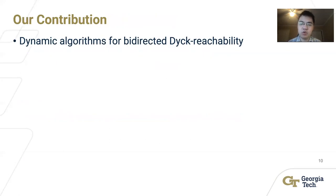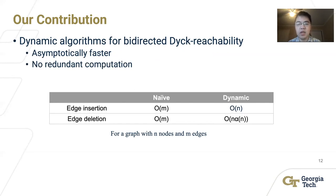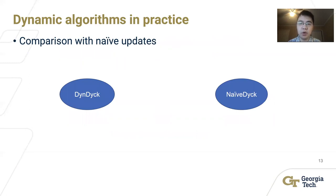In this work, our contribution is to fill in this gap and propose dynamic algorithms for Bidirected Dyck-Reachability. The proposed algorithms have an asymptotically faster running time than the static version. In comparison with the O(m) complexity using the naive approach, our algorithms achieve O(n) running time for edge insertions and O(n · α(n)) running time for edge deletions, where α(n) is the inverse Ackermann function, which can be regarded as a constant in practice. Our algorithms have no redundant computation for maintaining the Dyck-Reachability results. Our experiments also show that the proposed algorithms achieve two magnitudes of speedup over the naive approach.